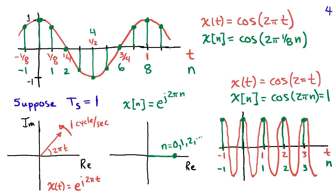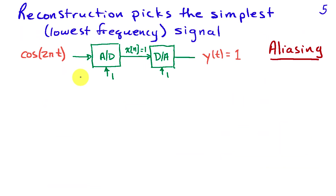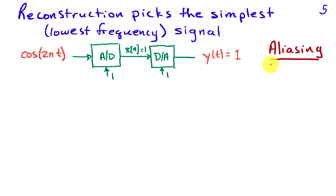There is confusion possible when we sample signals — a consequence of not sampling frequently enough. Reconstruction tries to find the simplest signal corresponding to the samples, which means connecting the dots with a smooth curve, i.e., finding the lowest frequency sinusoid. In the T_s = 1 second case with cosine(2πt), the samples are all equal to one, so reconstruction yields y(t) = 1, a sinusoid of frequency zero. This process — where a sinusoid of one frequency appears as a sinusoid of a different frequency — is called aliasing.